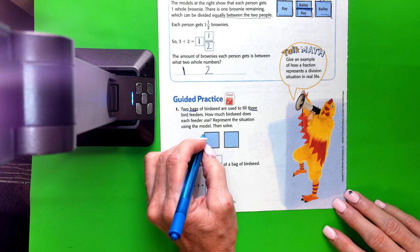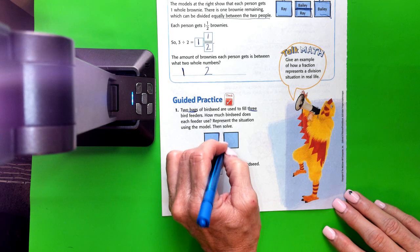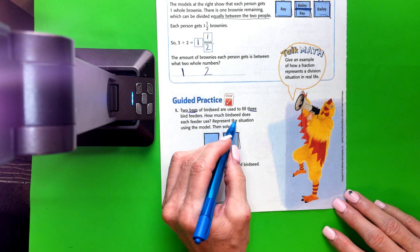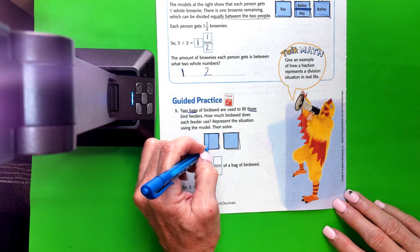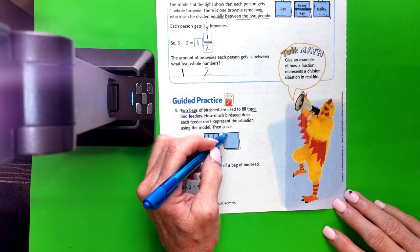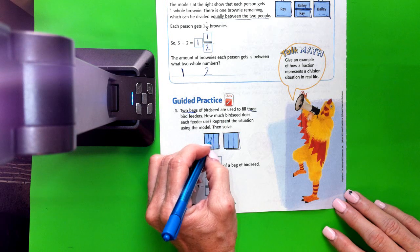And we have to divide that amongst 3. So we're going to split that, hopefully, roughly evenly. 1, 2, 3. 1, 2, 3.